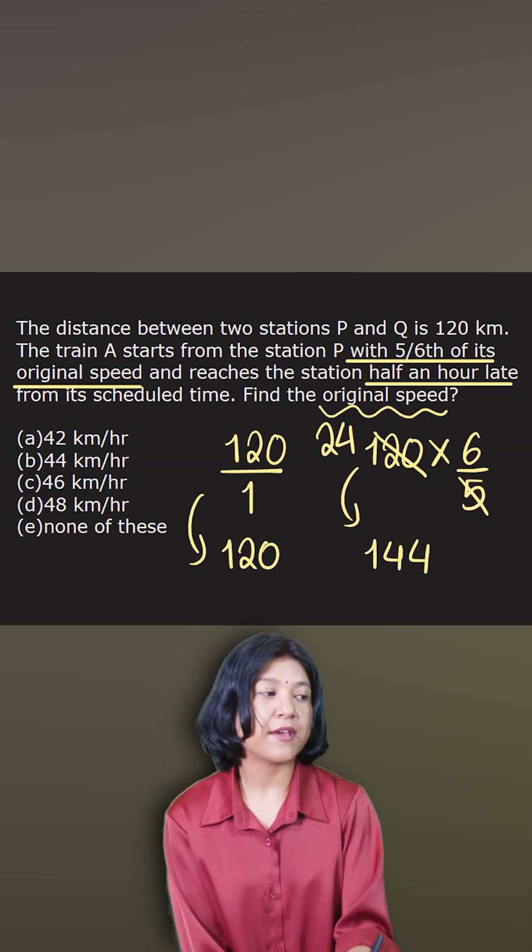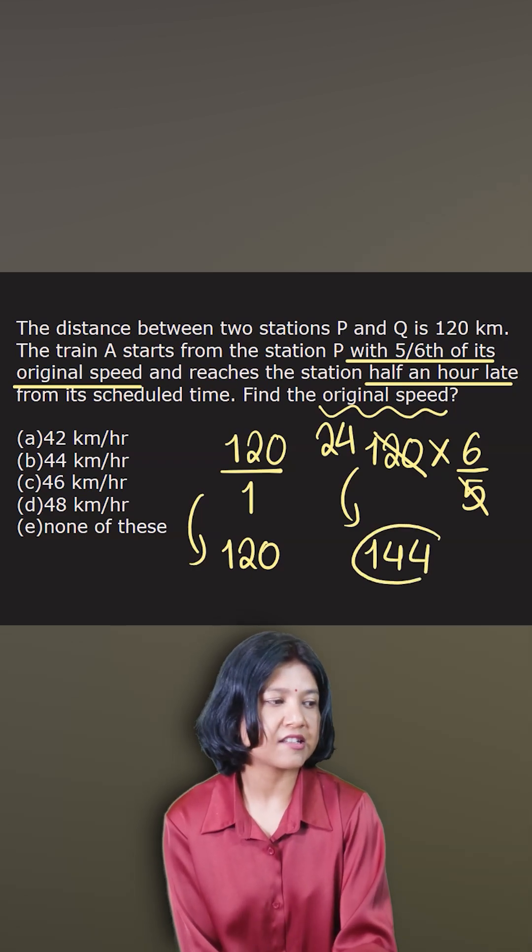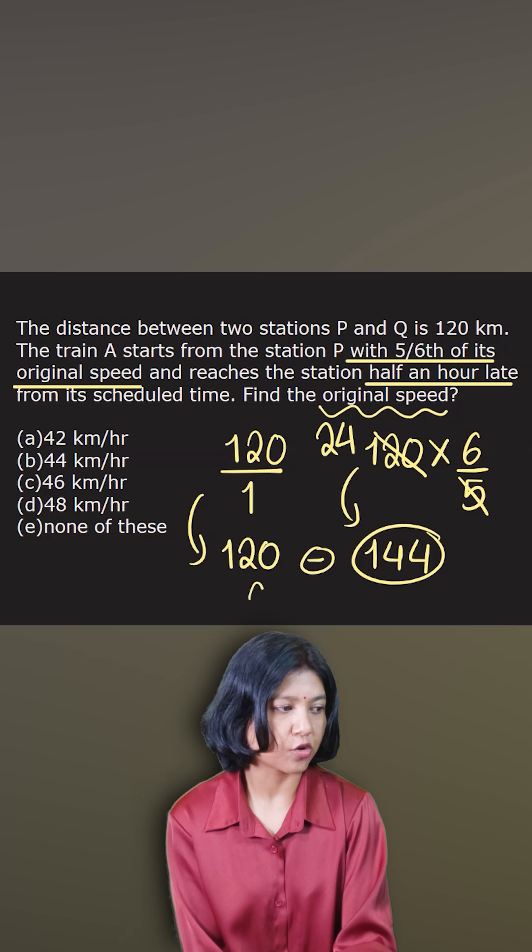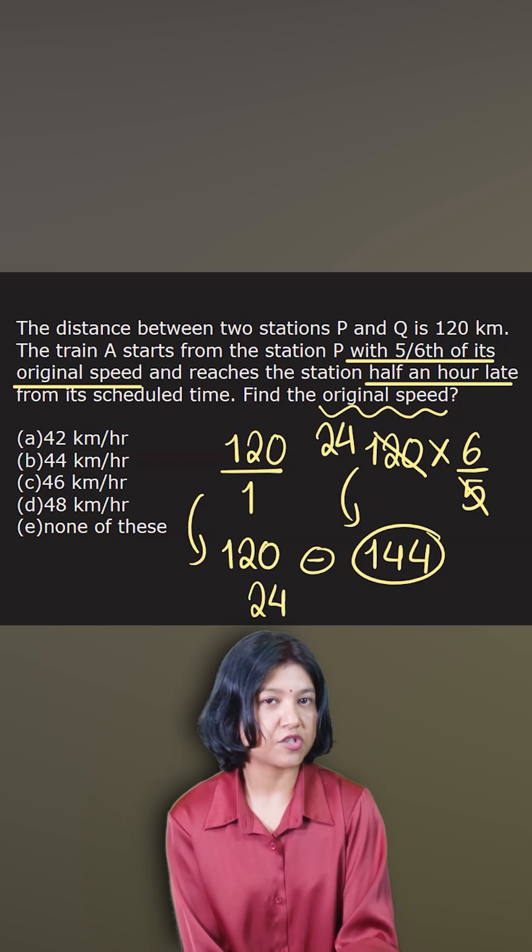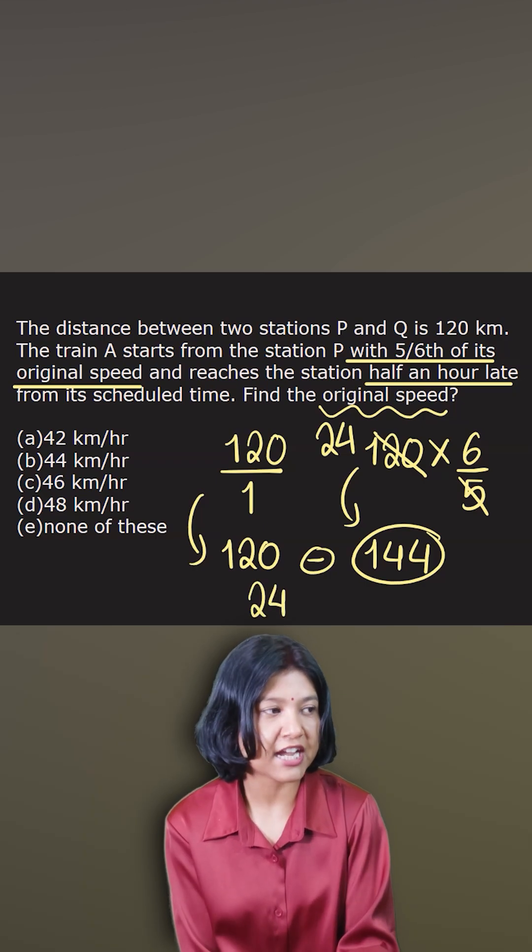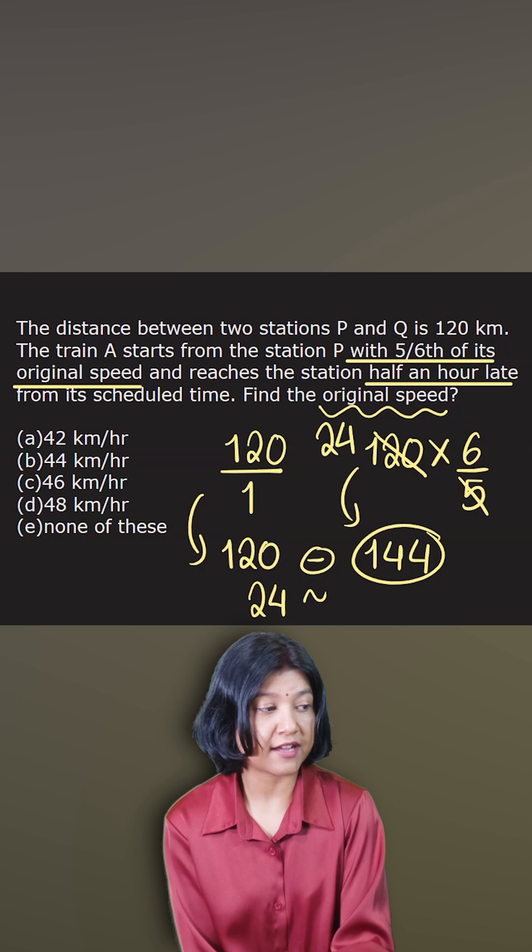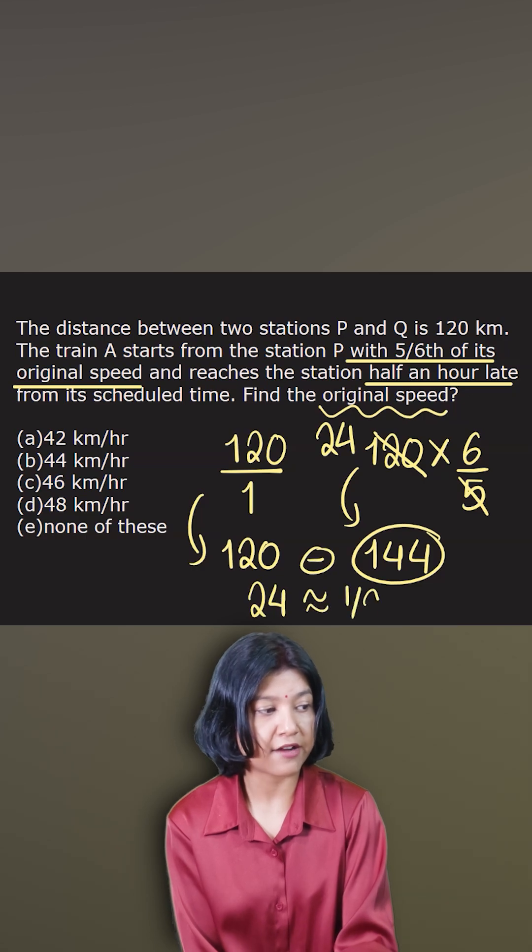So if I have to compare in terms of units, I clearly see that this is more. How much more? The difference is 24. Now this 24 units, which is supposed to be the difference of time, has the actual value of 1/2, half hour.